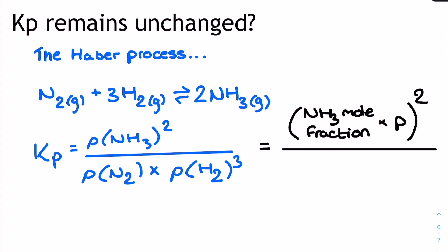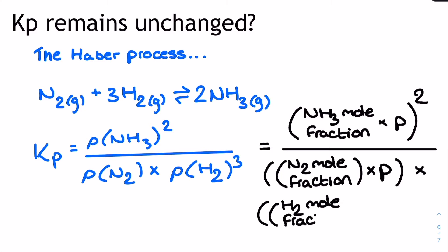we can see that each partial pressure is a product of the mole fraction for an individual gas multiplied by the total pressure of the system. Therefore, increasing the total pressure of the system will increase both the numerator and the denominator in the Kp expression.